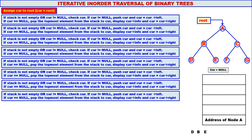Stack is not empty but curry is equal to null — one of those two conditions is true. We check curry. Since curry is equal to null, pop the topmost element from the stack to curry. The topmost element is address of node A — that is popped and assigned to curry. Display curry info — A is displayed. Curry moves to curry's right, and there is a right child: C. So curry goes to C.